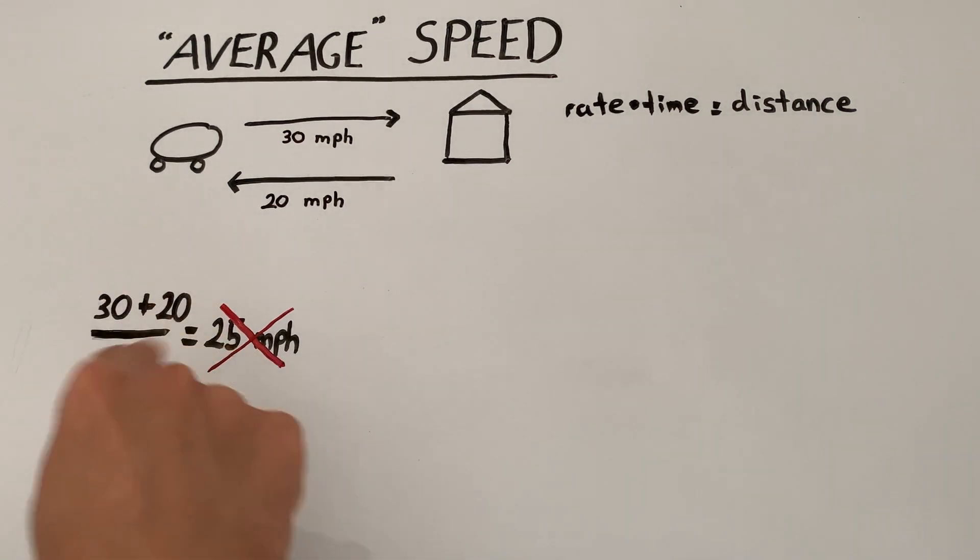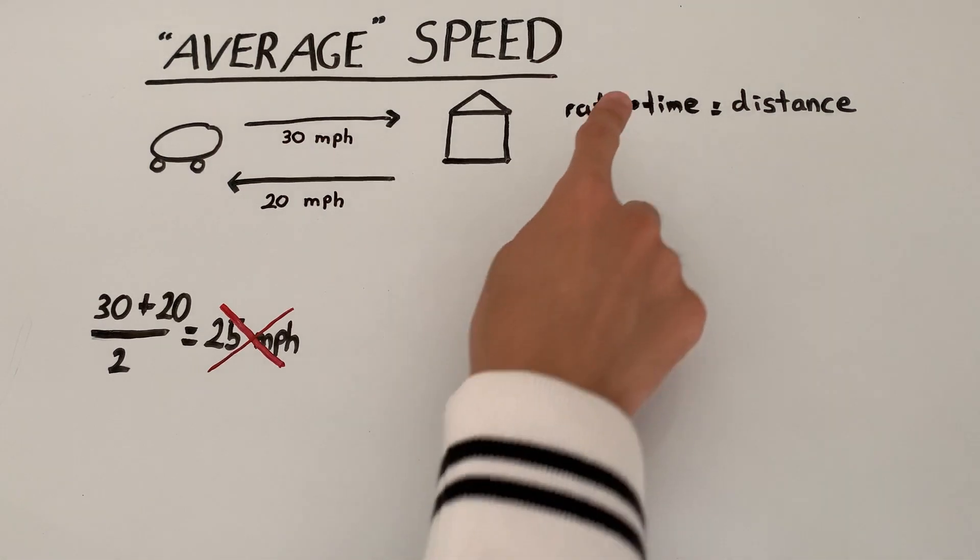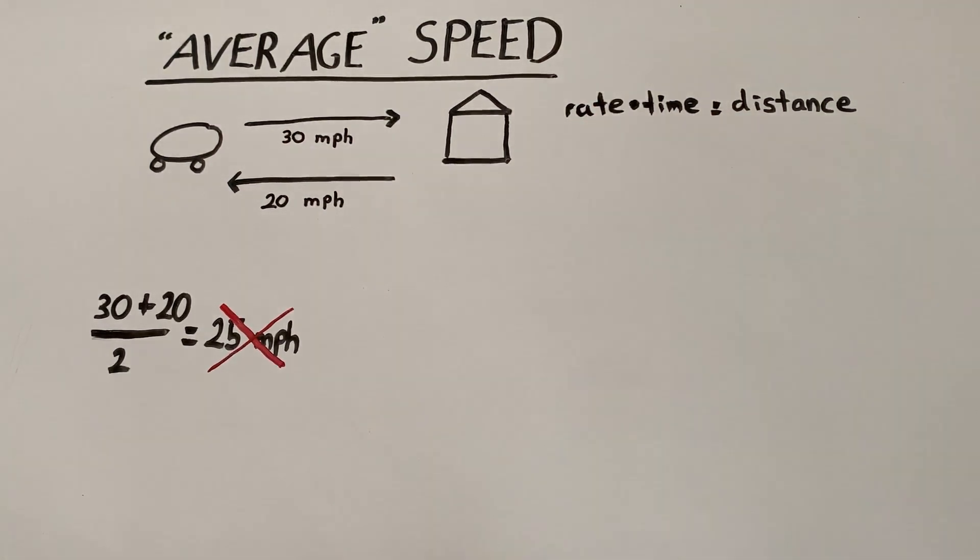This just makes so much sense. It's so correct. How can it be incorrect? We take our two speeds and then divide by 2 to get the average speed. Well, to answer that question, we're going to use this little equation, rate times time equals distance, to see why this logic is not correct.